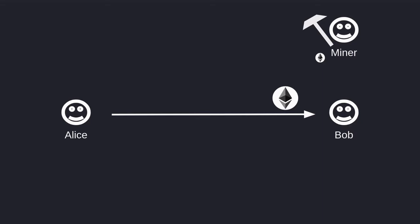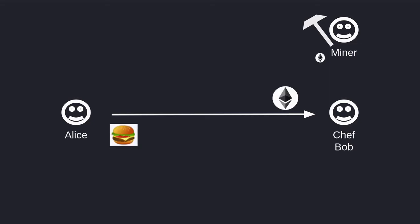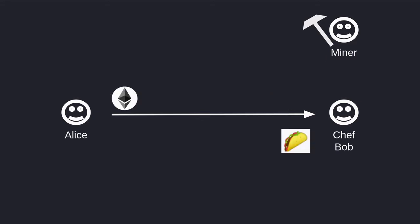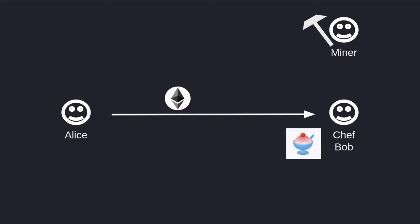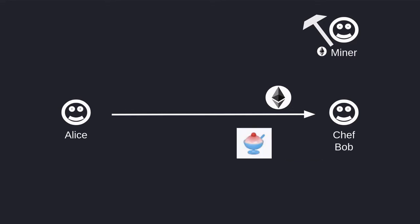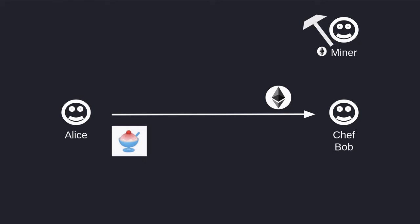To give you an example of when Alice needs to pay Bob multiple times, let's imagine that Alice visits a restaurant and she orders a hamburger from Chef Bob. She pays one Ether and some of the transaction fee goes to the miner. After eating her hamburger, the food is so good that Alice decides to order a taco. She sends Ether to Chef Bob, some transaction fee goes to the miner, and Alice receives her taco. After eating her taco, she orders a dessert by sending Ether, the transaction fee goes to the miner, and she gets her dessert. So in total, that's three transactions.